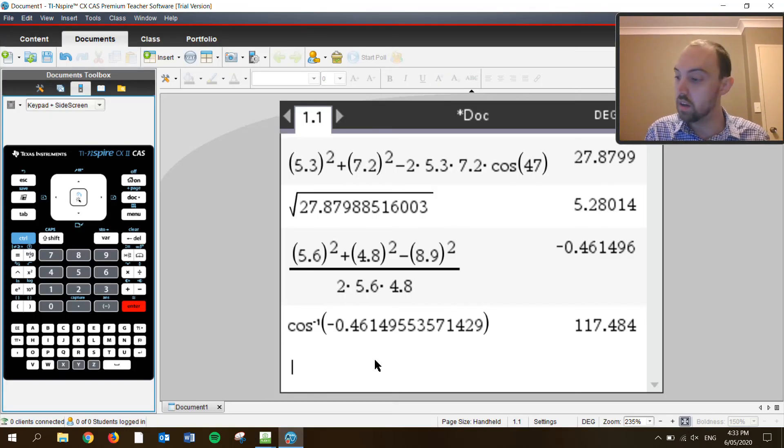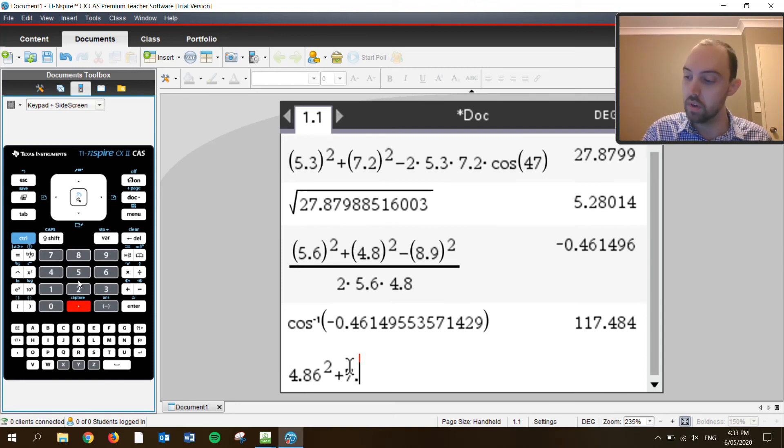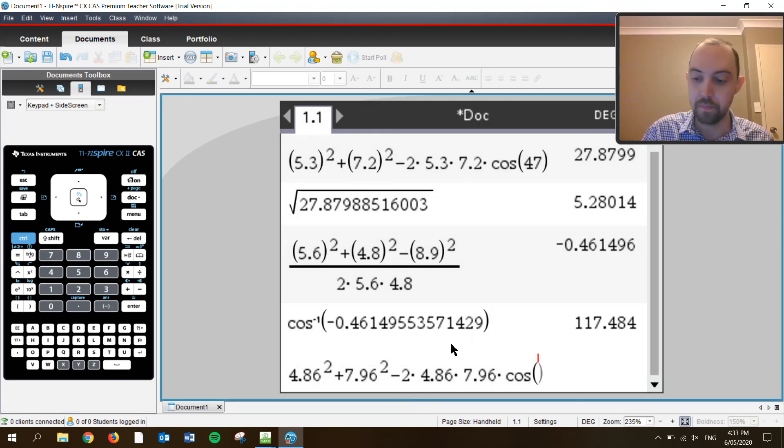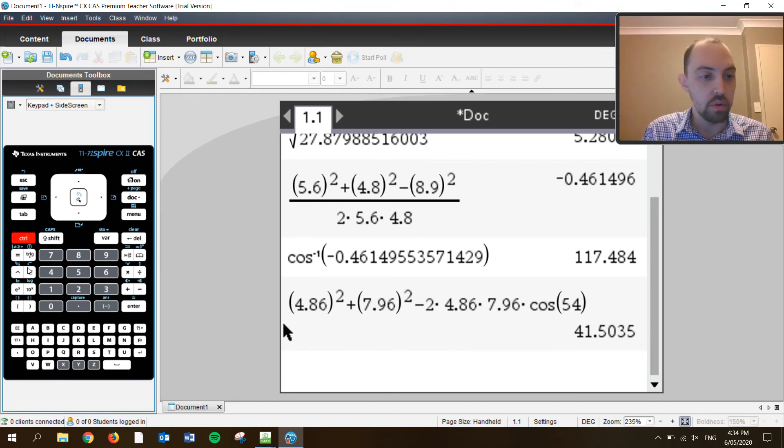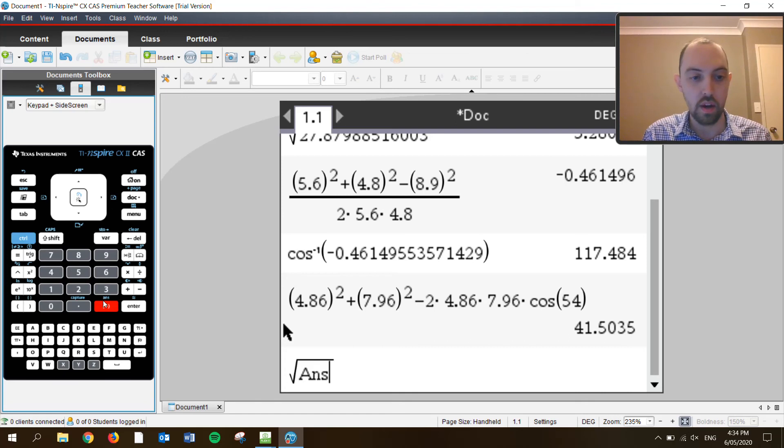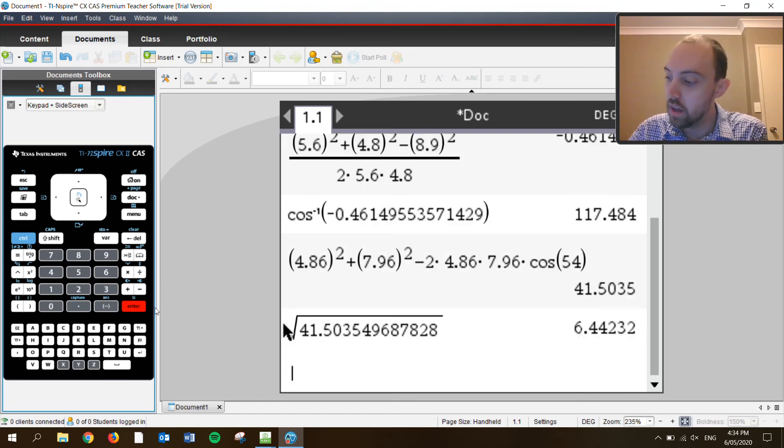For our calculator. So we've done 4.86 squared and 7.96 squared, take 2 times 4.86 times 7.96 times by the cosine of 54. So X squared is 41.5. And we're going to take the square root of that answer without rounding it. And we get 6.44 kilometers.